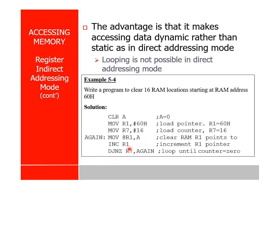DJNZ R7 again decreases R7 by 1 — it was 15, now it is 14. This process repeats 16 times. When the program finishes, the value of R7 will be 0 because when R7 is 0 it exits the loop. R1 will have been incremented 16 times from 60H. In the assessment I may ask: what is the value of R7 after finishing the program, and what is the value of R1?